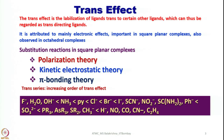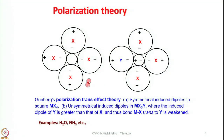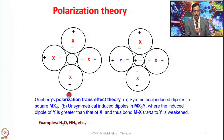The three theories are: polarization theory, kinetic electrostatic theory, and pi bonding theory. You should remember the trans effect order I mentioned — this is the trans effect series. For example, if OH minus is there, it can be readily replaced by NH3, and it goes on in that order. Now let us try to understand one theory at a time, and which theory is applicable for which class of ligands. The first is polarization theory, proposed by Greenberg — hence it is called Greenberg's polarization trans effect theory.